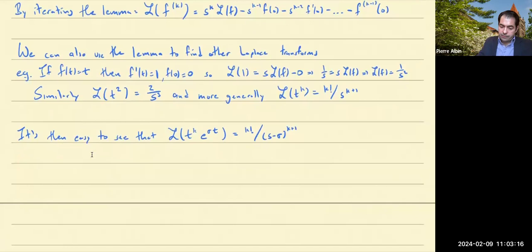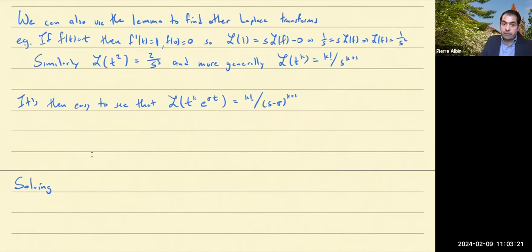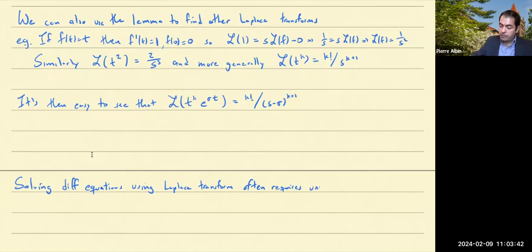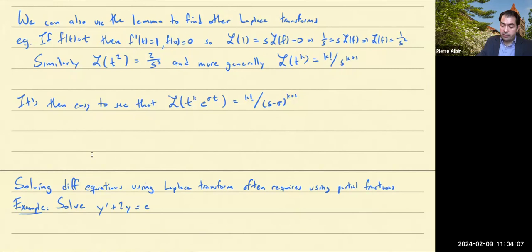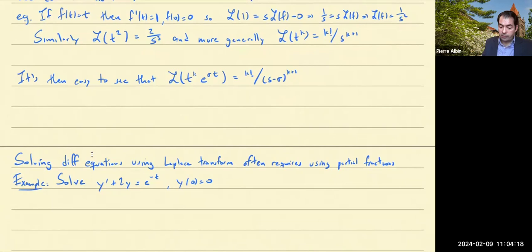When we're solving differential equations using the Laplace transform, it often requires using partial fractions, so you may want to review from pre-calculus and calculus how to use partial fractions. Here's an example: suppose you want to solve y prime plus 2y equals e to the minus t, with y of 0 equal to 0. This is an easy equation we now know at least two ways of solving — here's the third one using the Laplace transform.